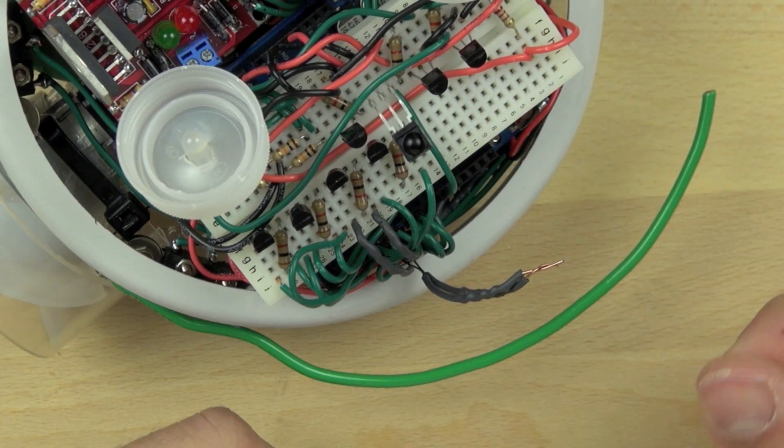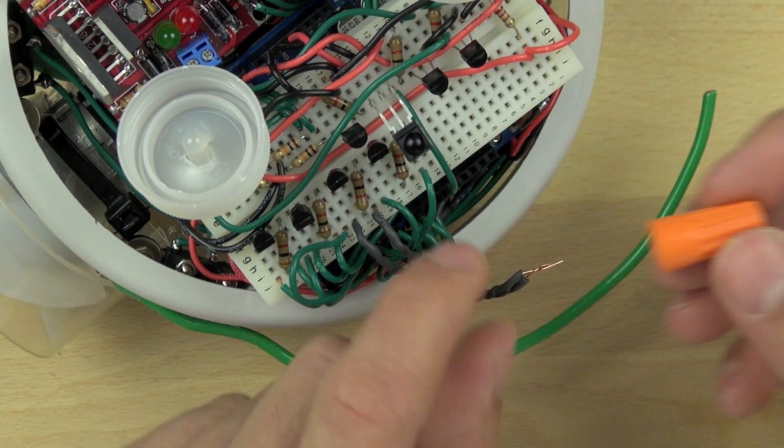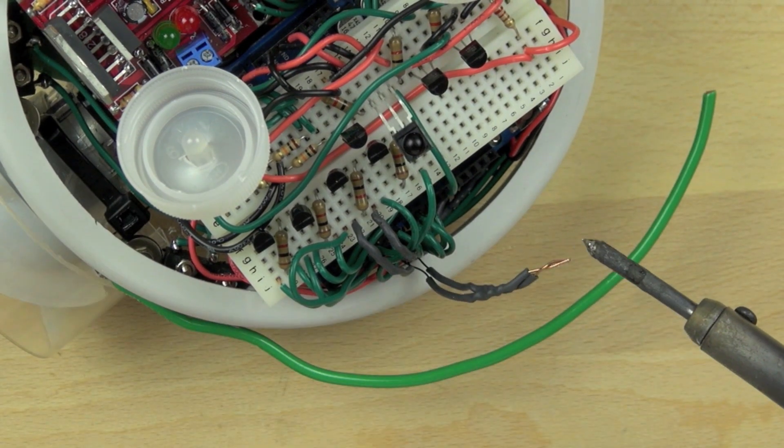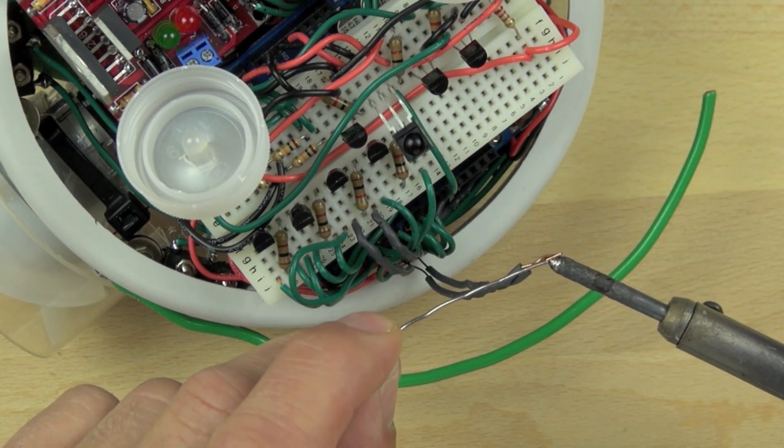We're twisting those together. We were going to use a wire nut to tie those together, which is this orange thing, but we decided not to. It was too big. So we're going to solder those together just using a soldering iron and some solder.